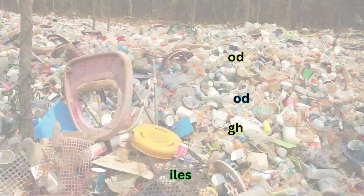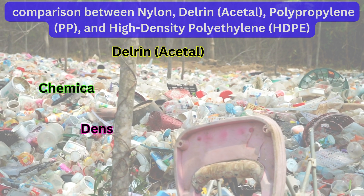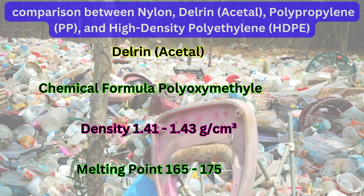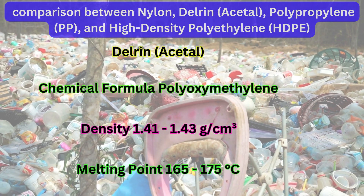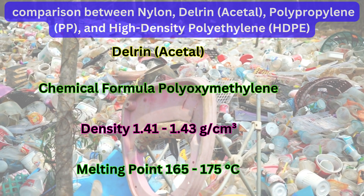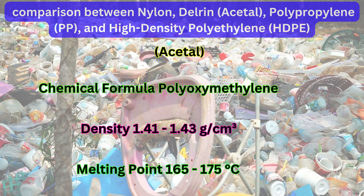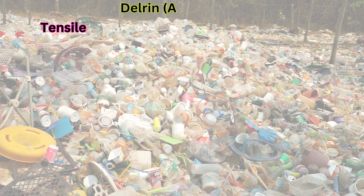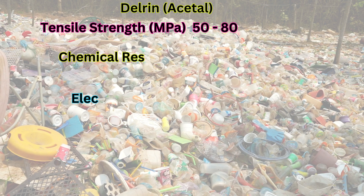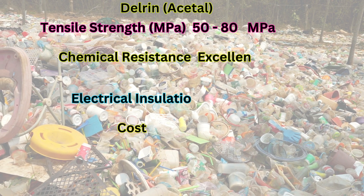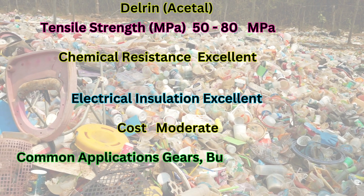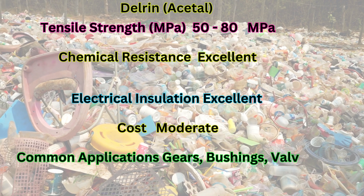Delrin/Acetal — chemical formula: polyoxymethylene (POM); density: 1.41 to 1.43 g/cm³; melting point: 165 to 175°C; tensile strength: 50 to 80 MPa; chemical resistance: excellent; electrical insulation: excellent; cost: moderate; common applications: gears, bushings, valves, automotive parts.